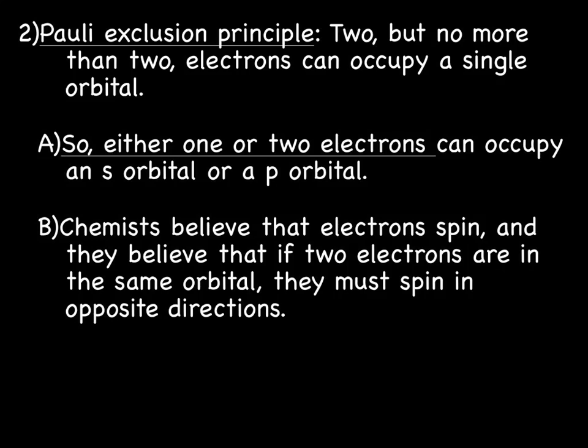Next is called the Pauli exclusion principle. Pauli says that two, but no more than two, electrons can occupy a single orbital. So either one or two electrons can occupy an s or a p orbital, or truthfully, a d or an f as well.